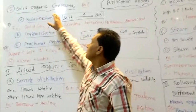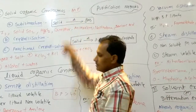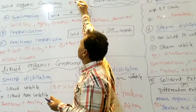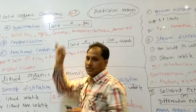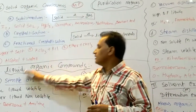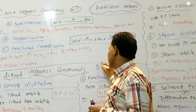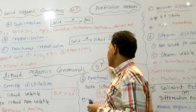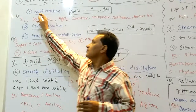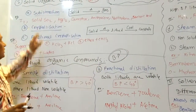If a solid organic compound is present, it is purified by which method? This is the melting point method. Solids are purified based on melting point, and liquids are purified based on boiling point. Solids are purified by two methods: one is sublimation, and another is crystallization.